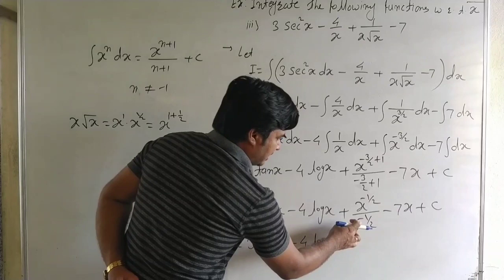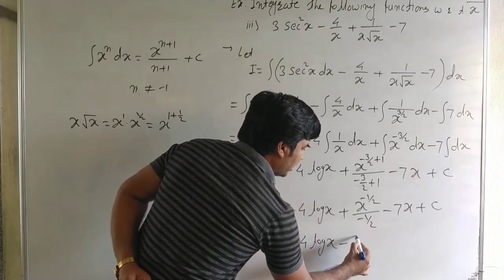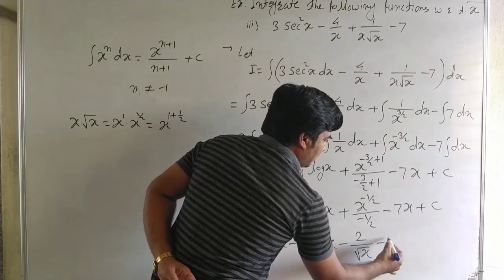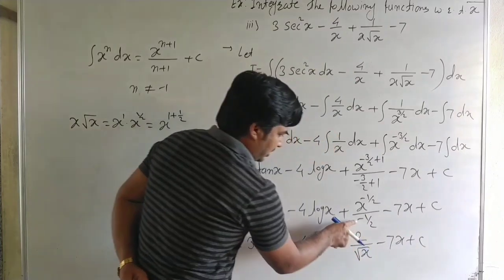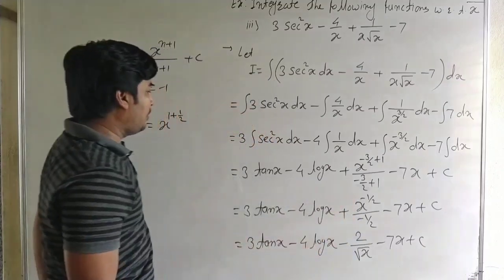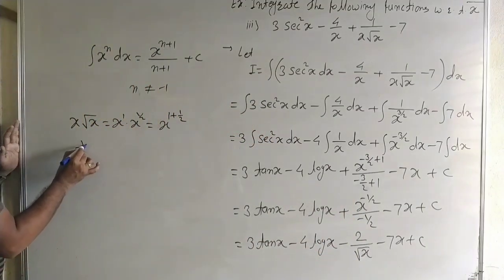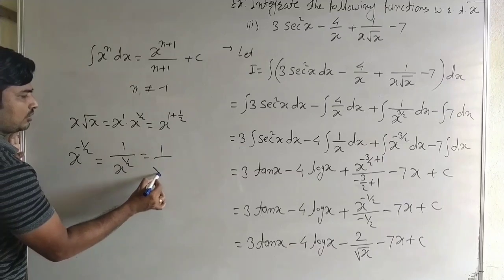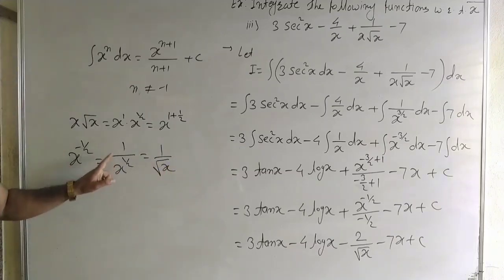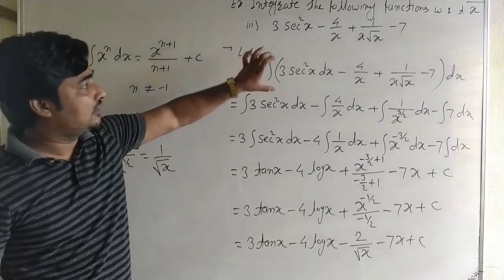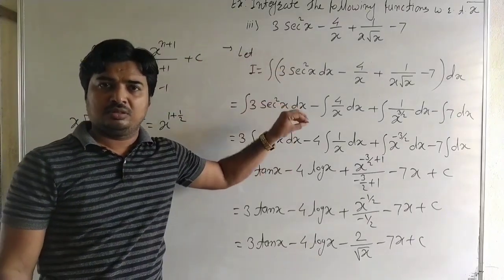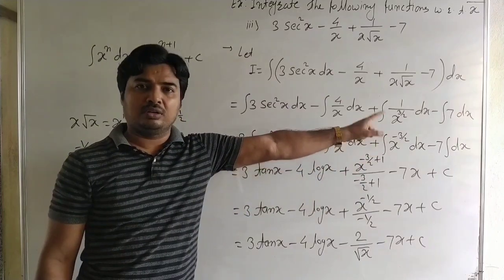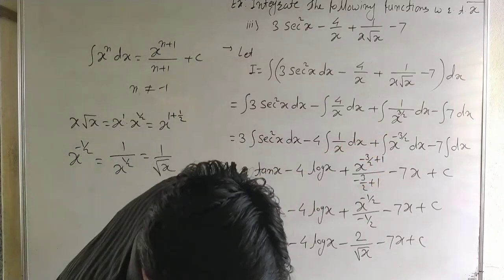Simplifying x^(−1/2)/(−1/2): the −1/2 denominator gives a factor of −2, and x^(−1/2) = 1/√x. The last answer is: 3 tan x − 4 log x − 2/√x − 7x + C. Here we used only the standard integrals: sec²x, 1/x, xⁿ, and integration of 1. Now we see the next example.